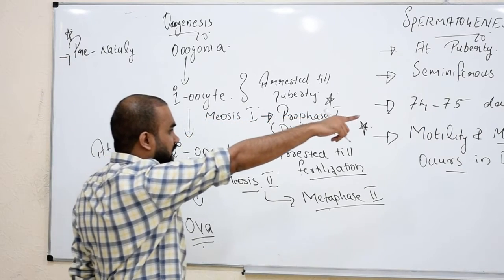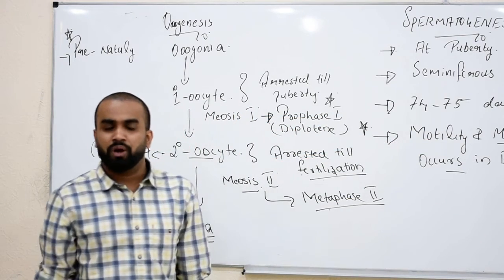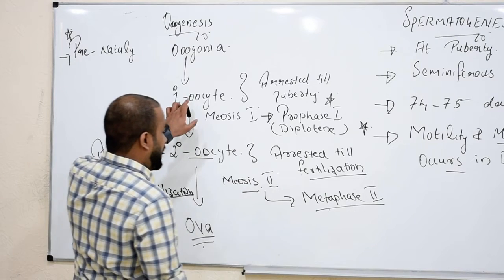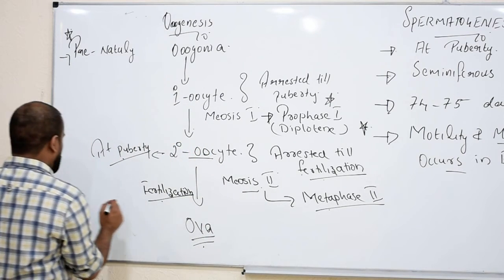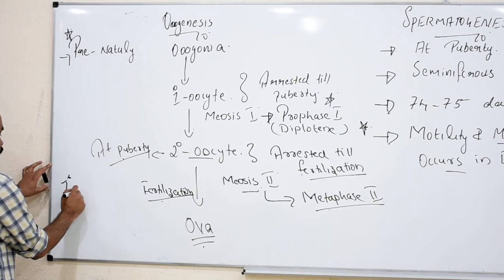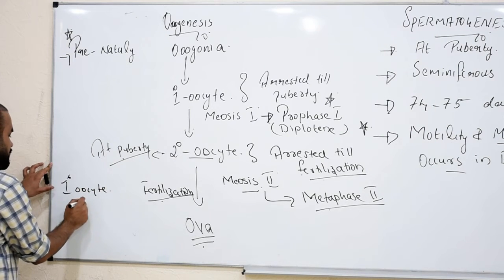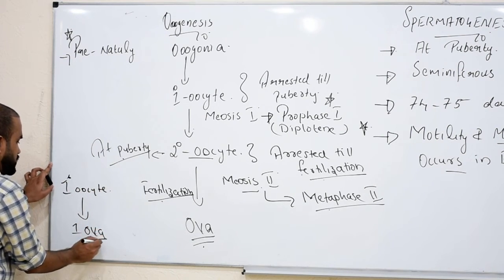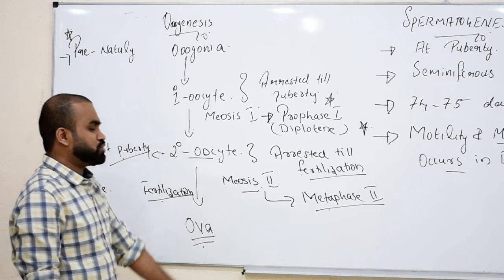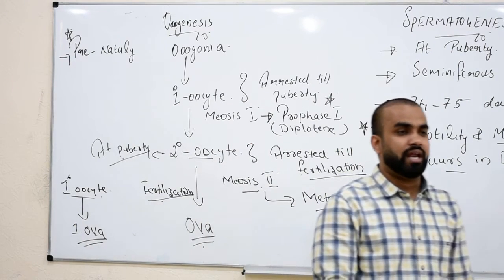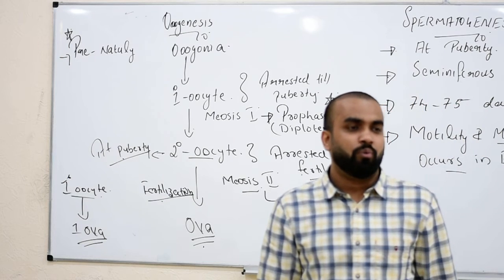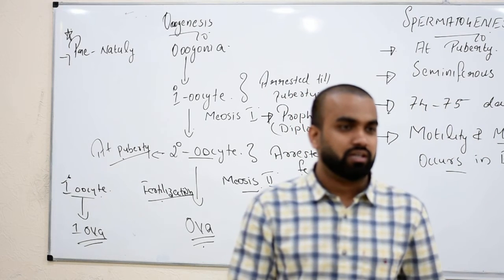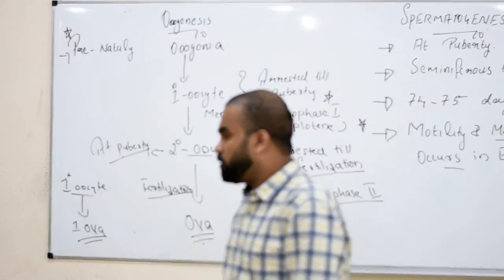From one primary spermatocyte, four sperms are formed. In contrast, from one primary oocyte, only one ovum is formed. So sperm are four in number, while ova are one in number. With this, both sperm and ova have been produced and gametogenesis is complete.